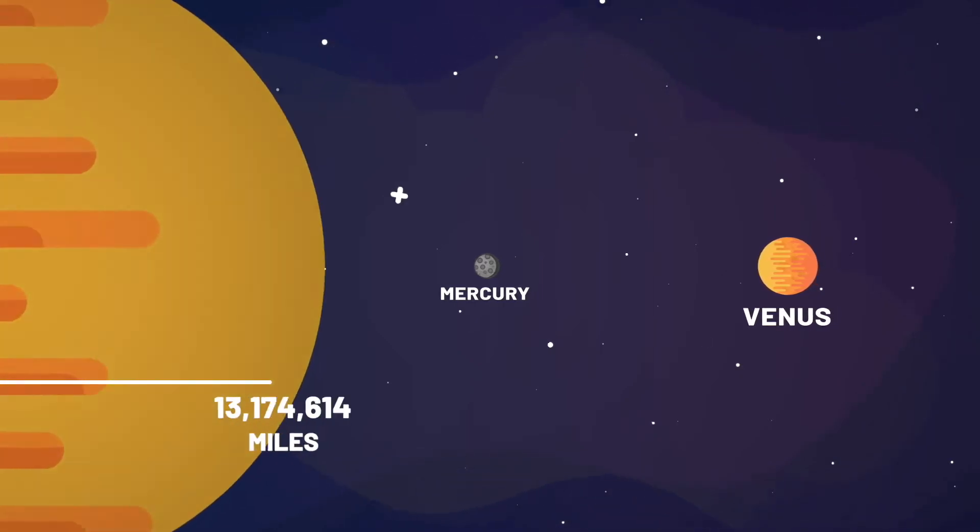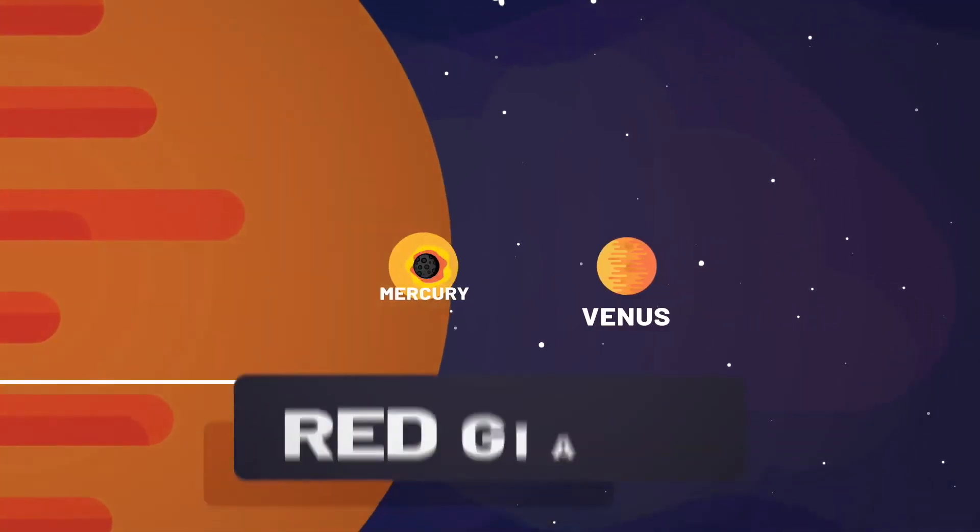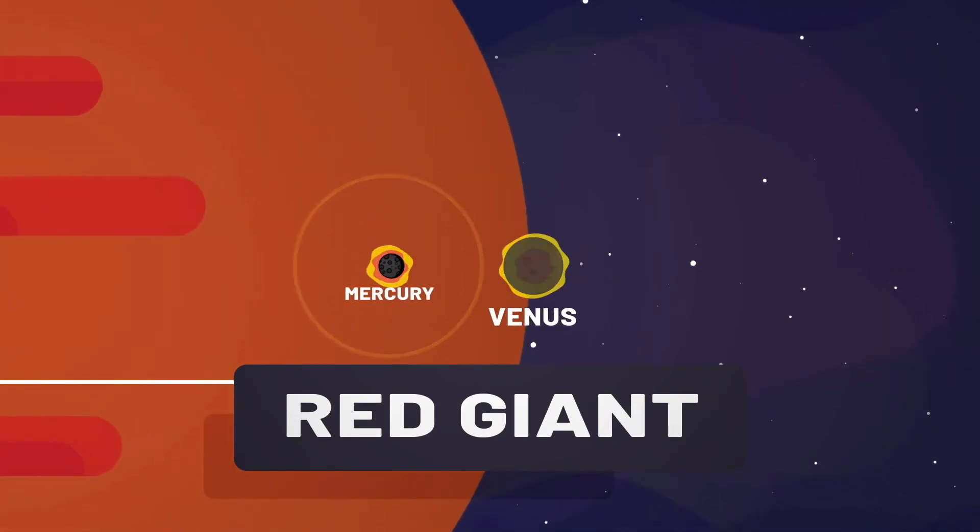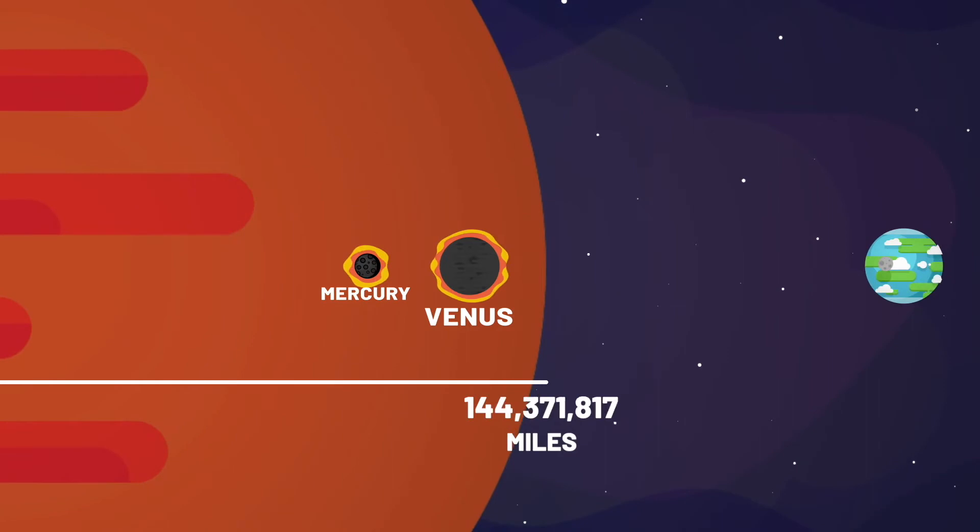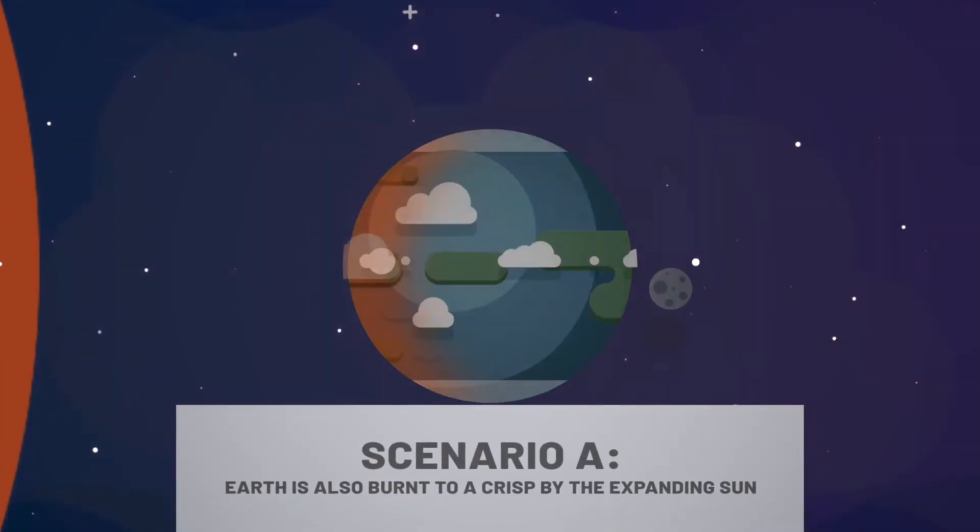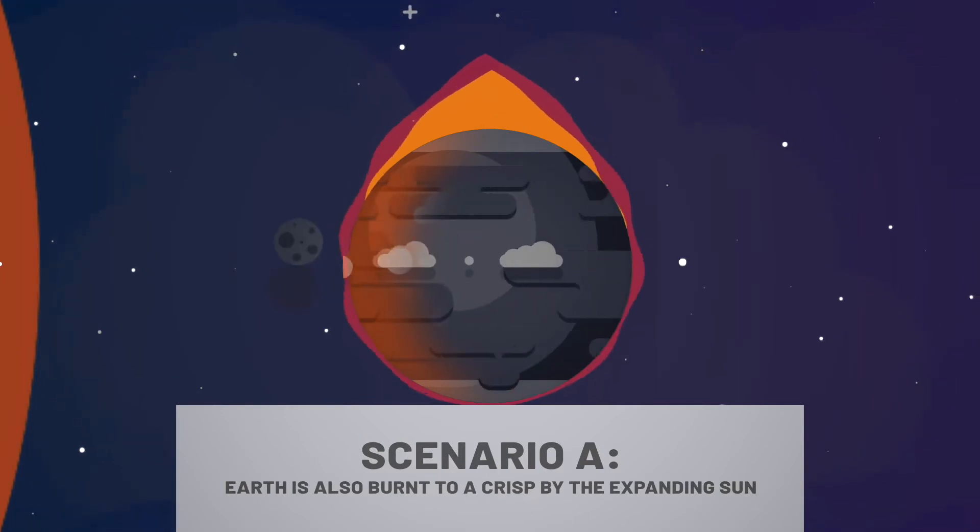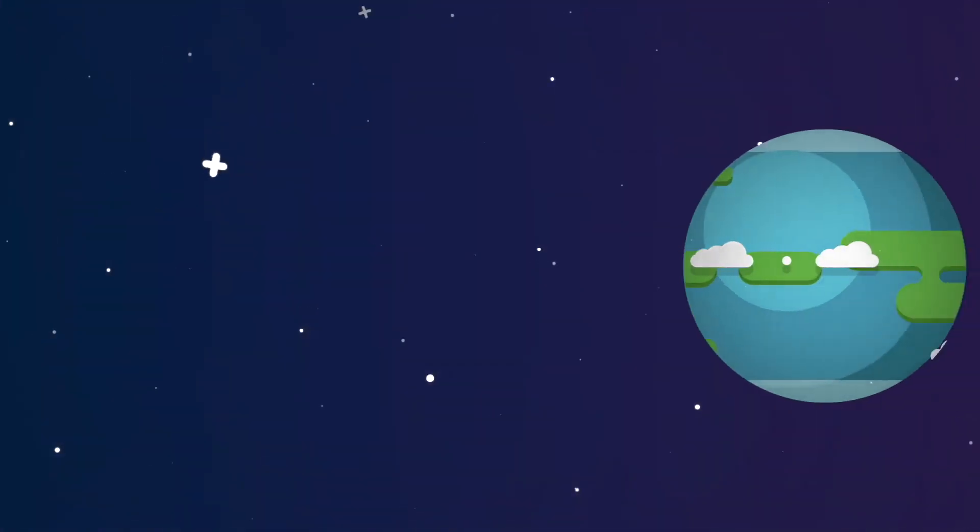This will cause the sun to expand outward to hundreds of times its current size, becoming a red giant. But this expansion will also be enough to completely incinerate Mercury and Venus. As for Earth, scientists are currently unsure whether it too will be fried, or simply pushed out of the sun's orbit to aimlessly wander space alone.